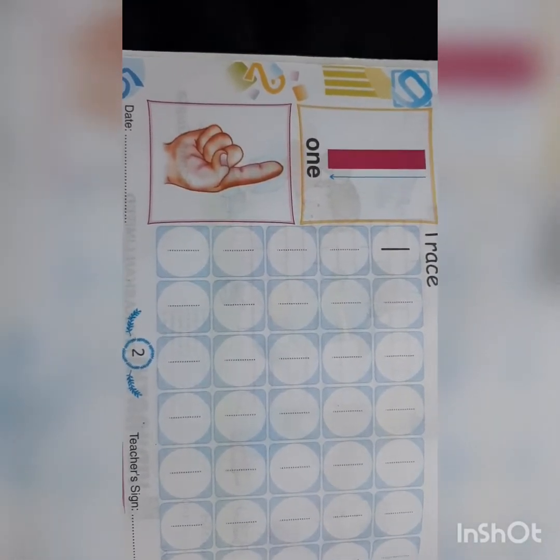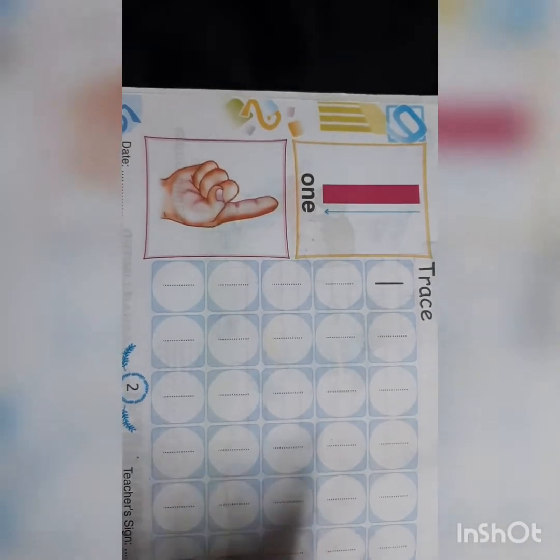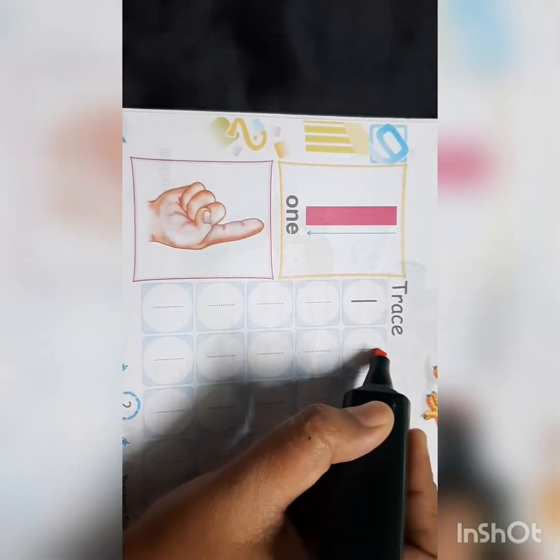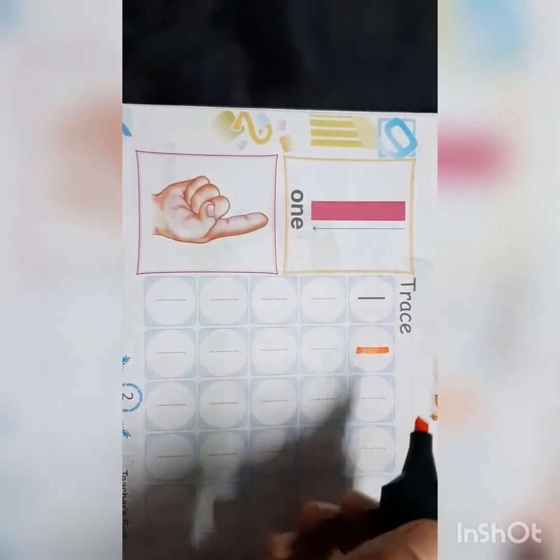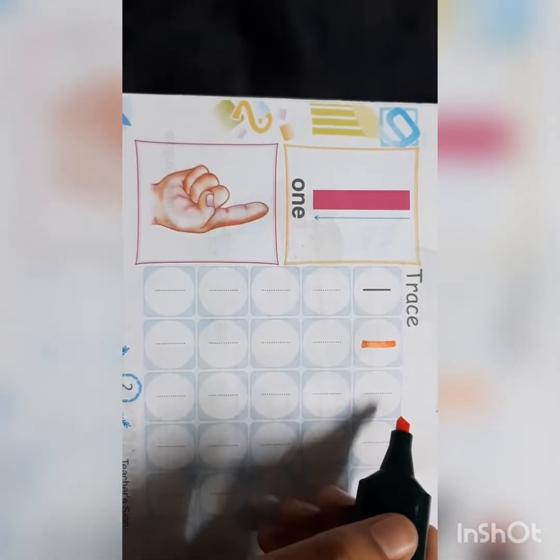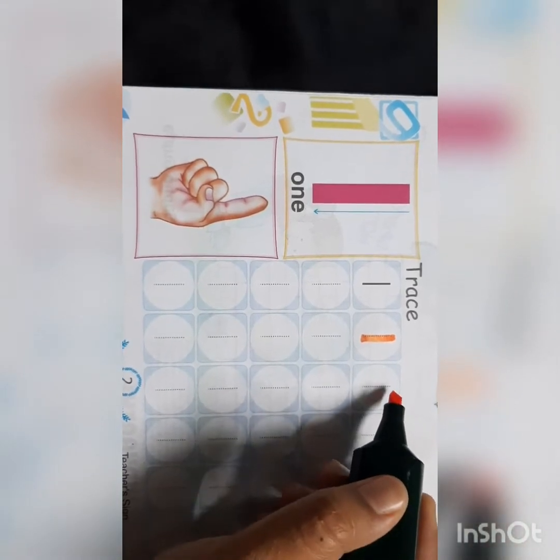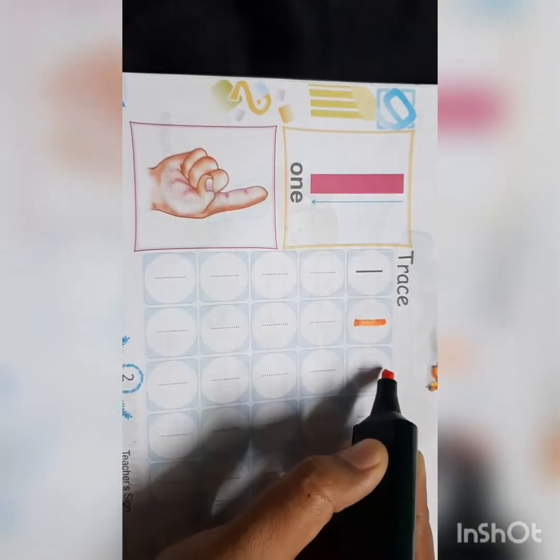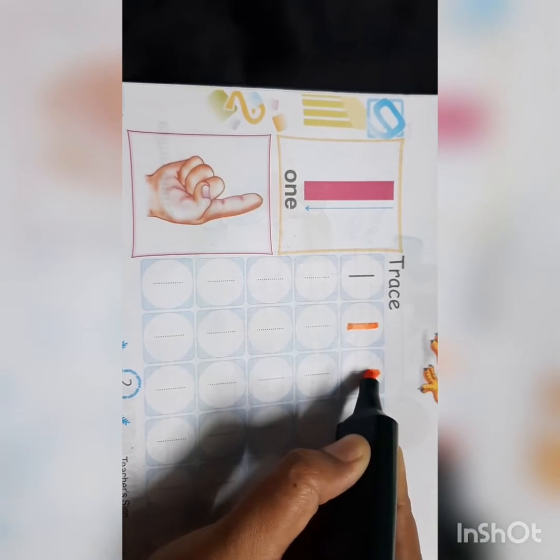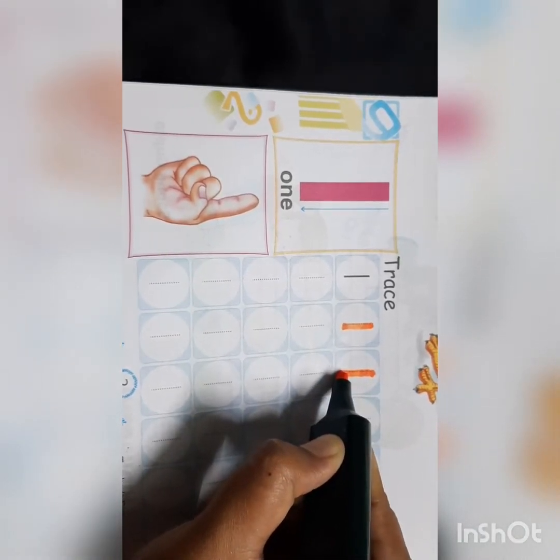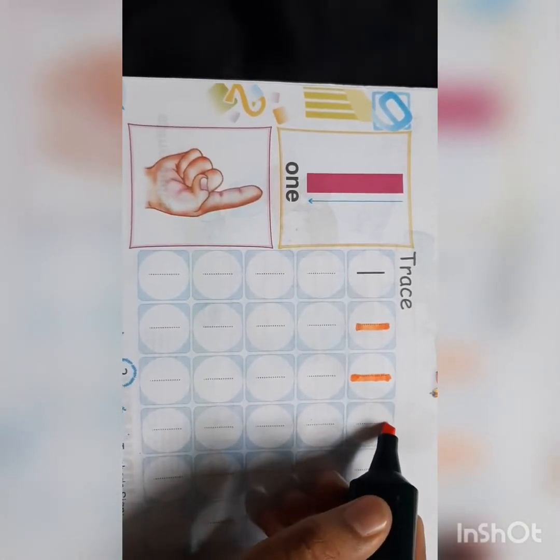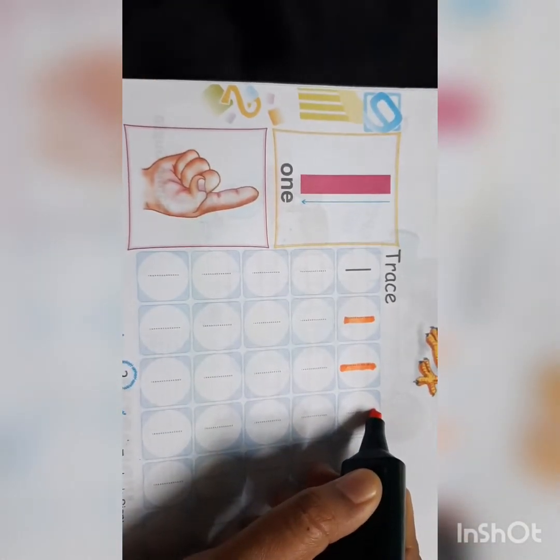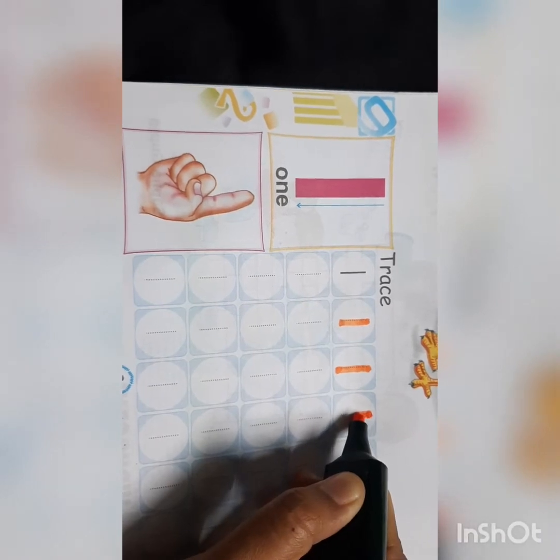Dear children, keep in mind: always when you write one, you should write like this way, from top to down. Again, watch me carefully, from up to downwards. From up to down.